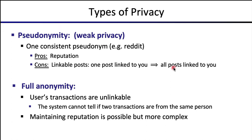Other systems provide full anonymity, where all transactions are unlinkable — nobody can tell that two transactions are from the same person. As a result, it's much harder to maintain a reputation because there's no record of what you did over time. There are reputation systems in full anonymity systems, but they're much more complex than in a pseudonymous system.